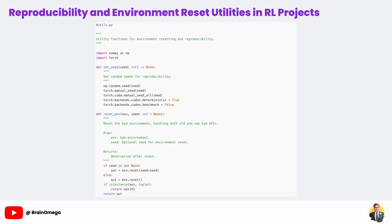By setting the random seeds for both NumPy and PyTorch, and configuring the backend to behave deterministically, we ensure that our experiments are repeatable. This means that if you or someone else runs the code with the same seed, you'll get exactly the same results.